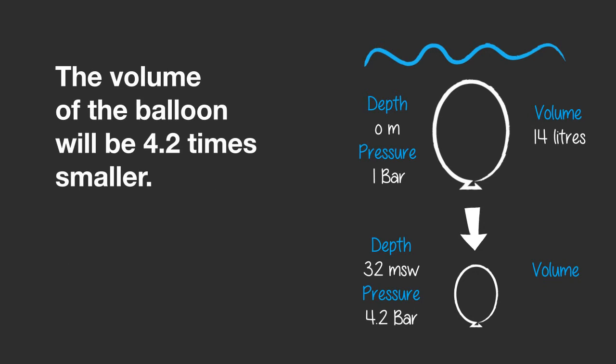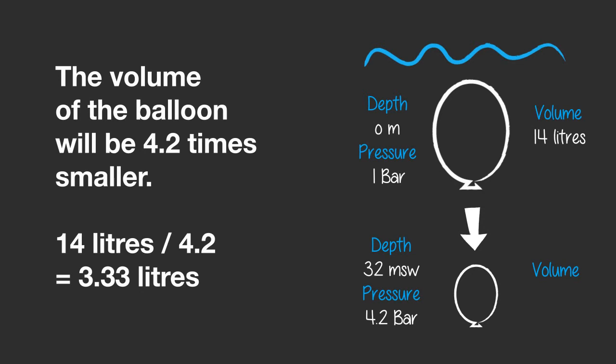So the pressure is 4.2 times higher at 32 meters, and the volume of the balloon will be 4.2 times smaller. 14 liters divided by 4.2 is 3.33 liters, so the new volume of the balloon will be 3.33 liters.